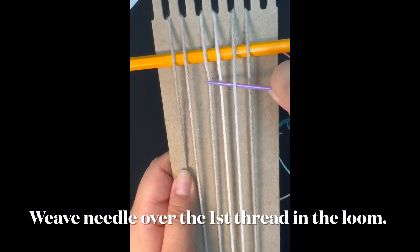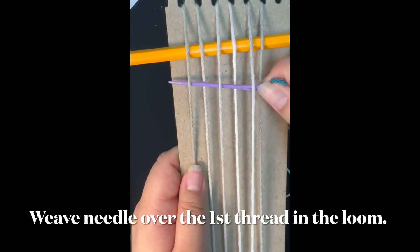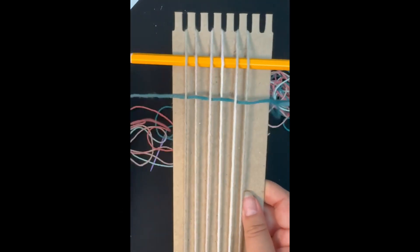Take your needle and go over, under, over, under, over, and then under again. Make sure that you pull it all the way through, leaving about one inch of excess yarn.